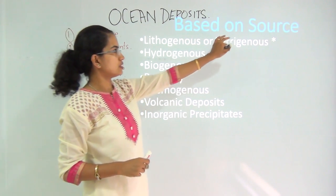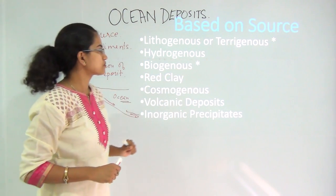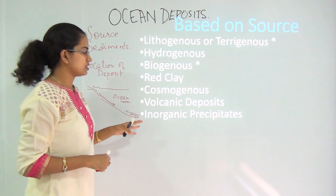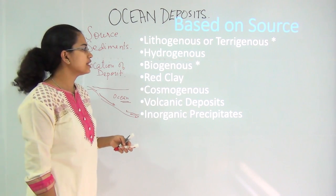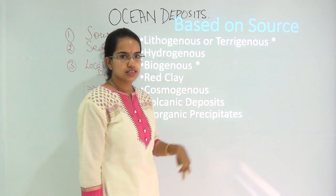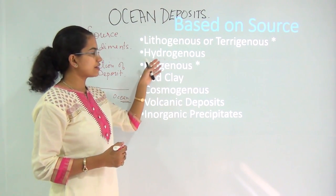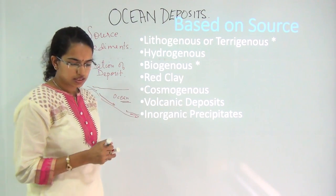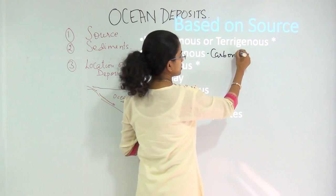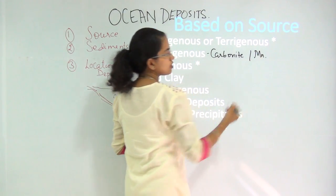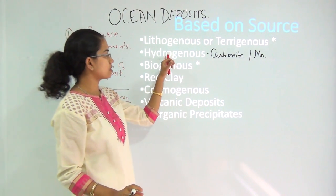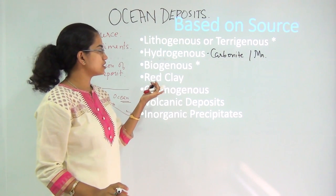We will start with the first: based on source. When we talk about classification based on source, we have a broad classification of seven types. The first is the lithogenous or terrigenous deposits, coming from the land. Then you have hydrogenous deposits, which include carbonates, magnesium, and phosphorus — these are the main ingredients of hydrogenous deposits.